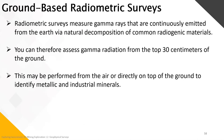A brief look at radiometric surveys: they measure the gamma rays continuously emitted from the Earth via natural decomposition of common radiogenic materials. You can therefore assess gamma radiation only from the top 30 centimeters of the ground. They may be performed from the air or directly on the ground to identify metallic and industrial minerals.